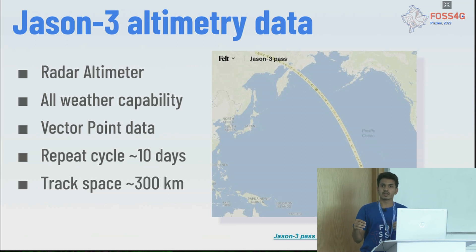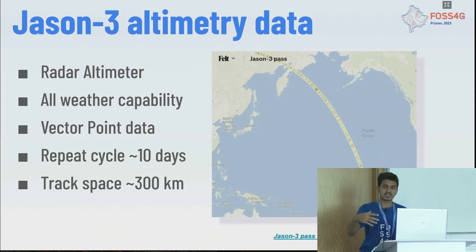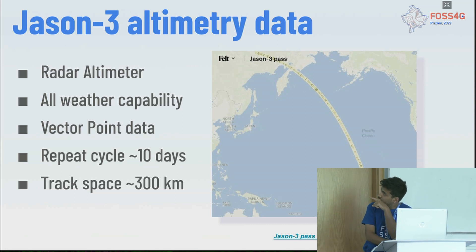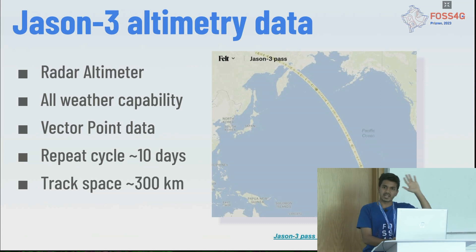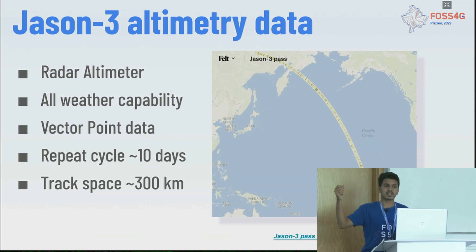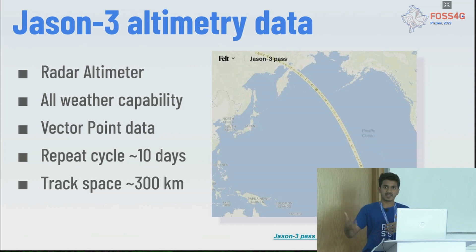Because the track spacing is 300 meters, many smaller water bodies are not covered — you need a large water body to be within the altimeter's path. The points from a river or ocean will give you the water level at that point. Traditionally it was used for monitoring the ocean, but with advancements you can now measure water bodies within land as well.